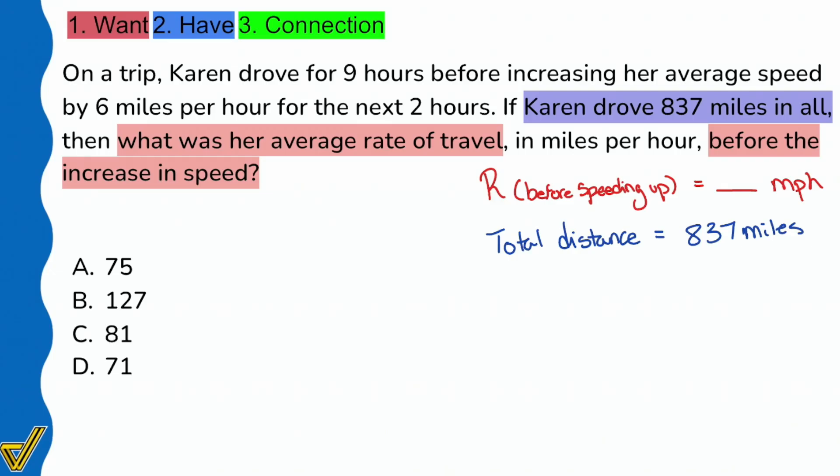Now let's continue looking at the information to see what we can put together. On a trip Karen drove nine hours before increasing her average speed. It looks like we have two legs of this trip: before increasing her speed and then after. I'm going to write down on the left side 'before' and then 'after' and write down the details for each.